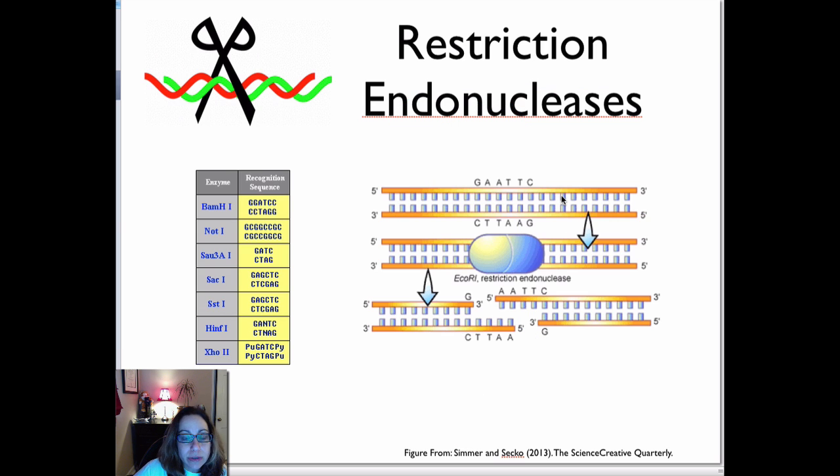So restriction endonucleases. We already mentioned restriction endonucleases as the molecular scissors. So what restriction endonucleases do is they are enzymes that will come along DNA, and whenever they see what's called a recognition sequence, they will cut at a specific site.